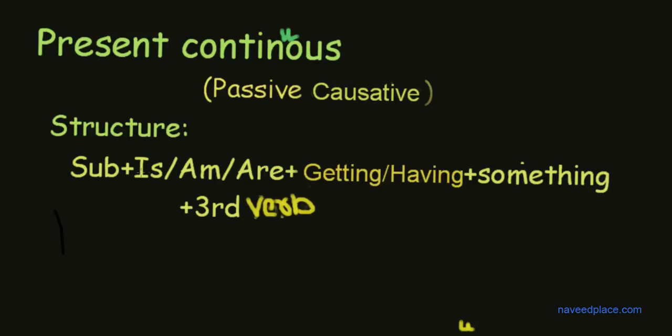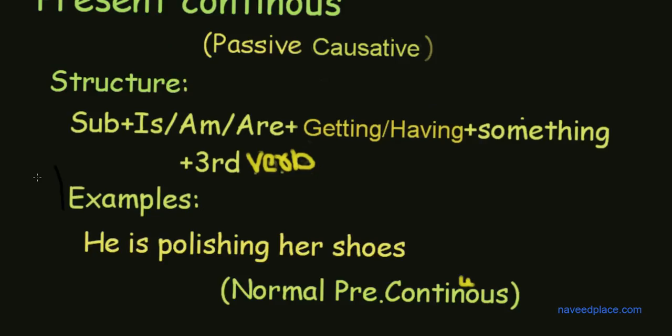So the structure is here: subject plus is/am/are plus getting or having plus something plus third form verb. Now see the example of normal present continuous. So the example is here.